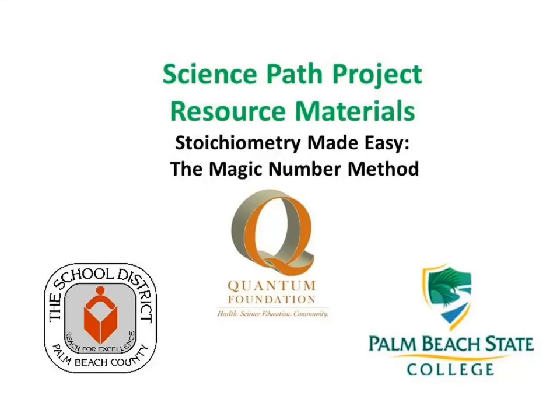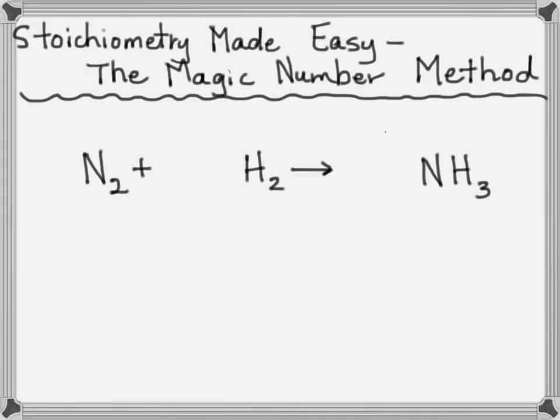Stoichiometry made easy, the magic number method. This is a quick shortcut method for solving stoichiometry problems.